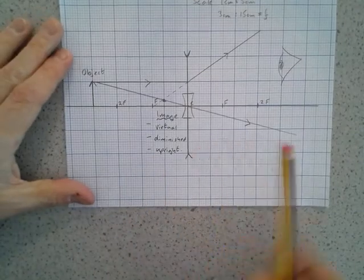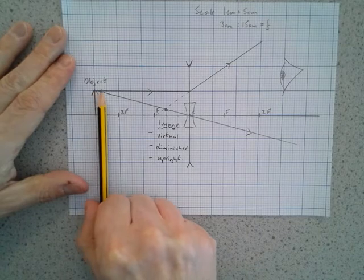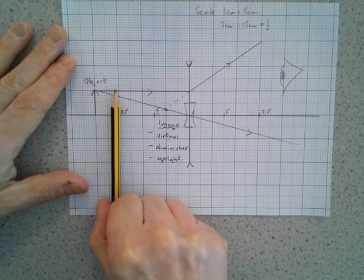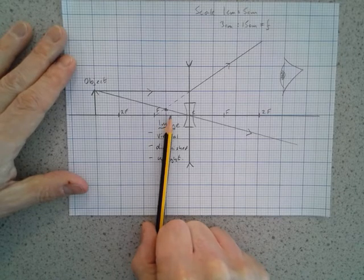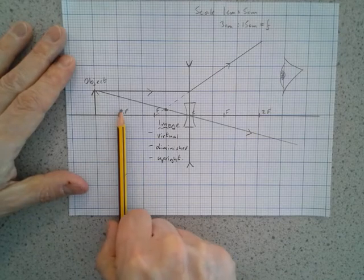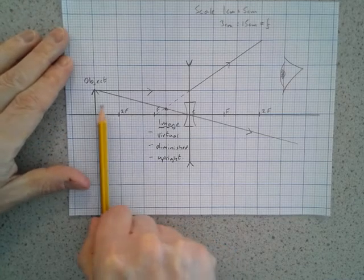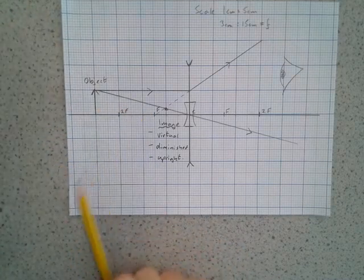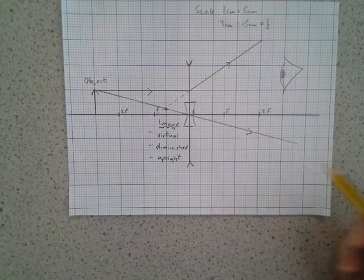If we go back to the diagram, you might be able to deduce that if we move the object, if we push the object further in, the image will move a little bit closer to the lens but it will still be virtual, diminished, and upright. If we push the object in further it will still be virtual, diminished, and upright. So actually no matter where we put the object in front of the diverging lens, the image is always the same. We don't have to draw a series of diagrams. In this case one is enough.